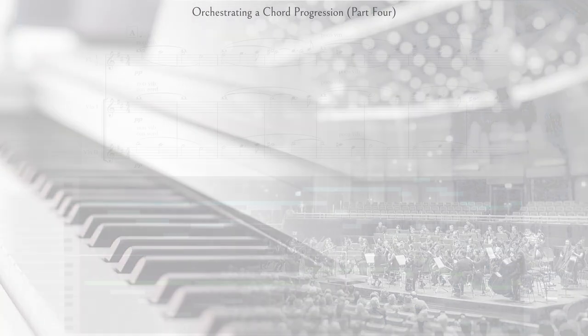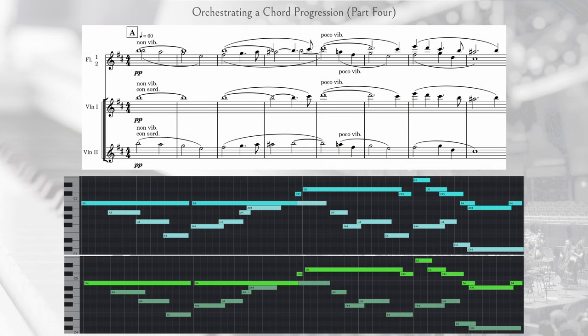Okay, I'll start by looking at this orchestration of section A. Here I have violins 1 and 2 doubled with flutes. I start both instrument groups with no vibrato, then move to poco vibrato in measure 5. I also have violins muted throughout.